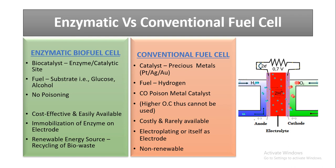In an enzymatic biofuel cell there is no poisoning of the catalyst, whereas in a conventional fuel cell the metal catalyst may be poisoned by carbon monoxide — and we cannot use higher organic compounds because oxidizing them produces carbon monoxide which poisons the catalyst. Enzymatic biofuel cells are cost-effective with easily available enzymes, whereas in conventional fuel cells the metals are precious, costly, and rarely available.